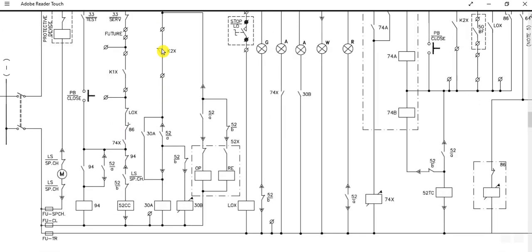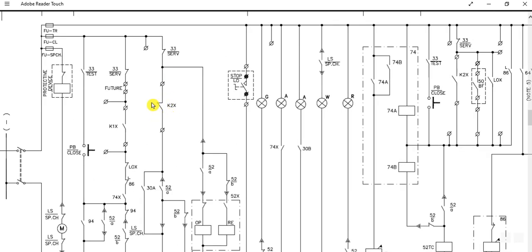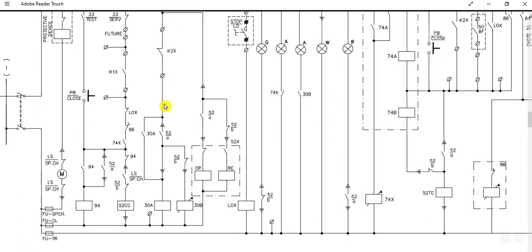When the circuit breaker is in service position, this path is followed. 52X means the stop or trip command is not given. Since the 52CC was already energized, the 52A contact — the breaker's auxiliary contact — will be closed. The 30A relay will pick up, and its normally-open contact will close. This is called the sealing of the circuit breaker, so it remains in the closed position.